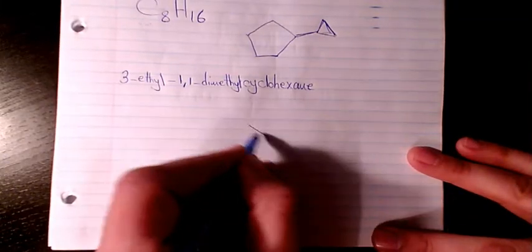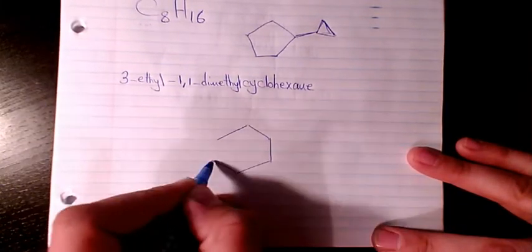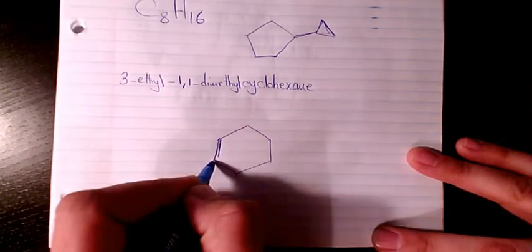So cyclohexane, we are dealing with a cyclic compound. It's alkane but cyclic alkane. It has six atoms there, so we have one, two, three, four, five, six. One, two, three, four, five, six.